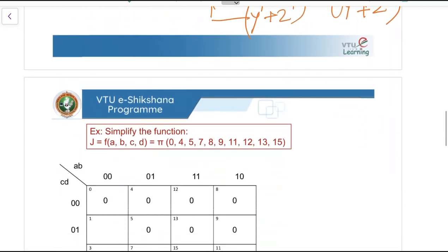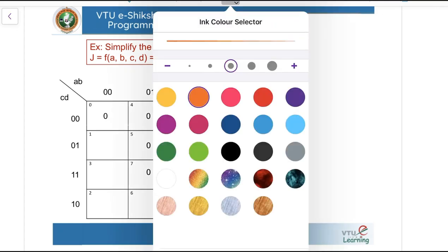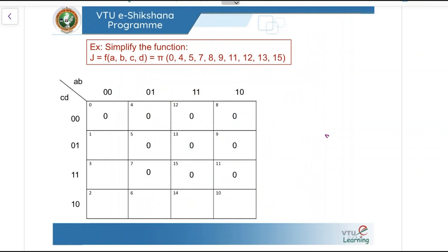Let us see the next example — a 4-variable K-map. Simplify the function J equals f of ABCD equals pi of 0,4,5,7,8,9,11,12,13,15. The structure of the K-map remains the same with AB on one side and CD on the other side, using Gray code: 00, 01, 10, 11. We load 0s into the K-map for each of the max terms.